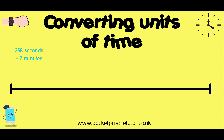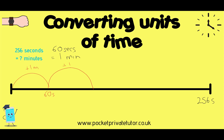Now we'll have a go with another pair of units — seconds and minutes. How many minutes is 256 seconds? Again, I need to write down that there are 60 seconds in one minute. I'm going to write 256 seconds at the end and start jumping on in one-minute steps, each worth 60 seconds. So we are doing 256 divided by 60, seeing how many jumps of 60 we can get.